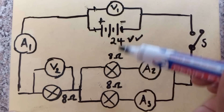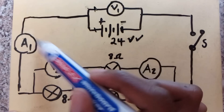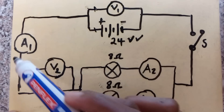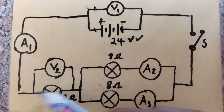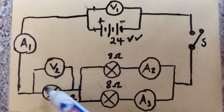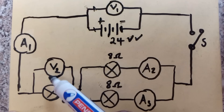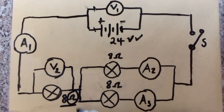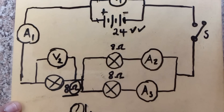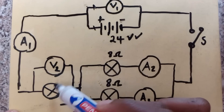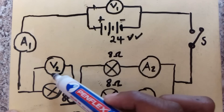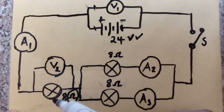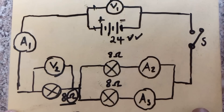Moving along, we have our first ammeter A1, which measures current. Continuing down the same branch, there is a light bulb with a resistance of 8 ohms. Just above that light bulb is another voltmeter called V2, and it is also connected in parallel to the light bulb. A voltmeter is always connected in parallel to whatever component it is measuring.